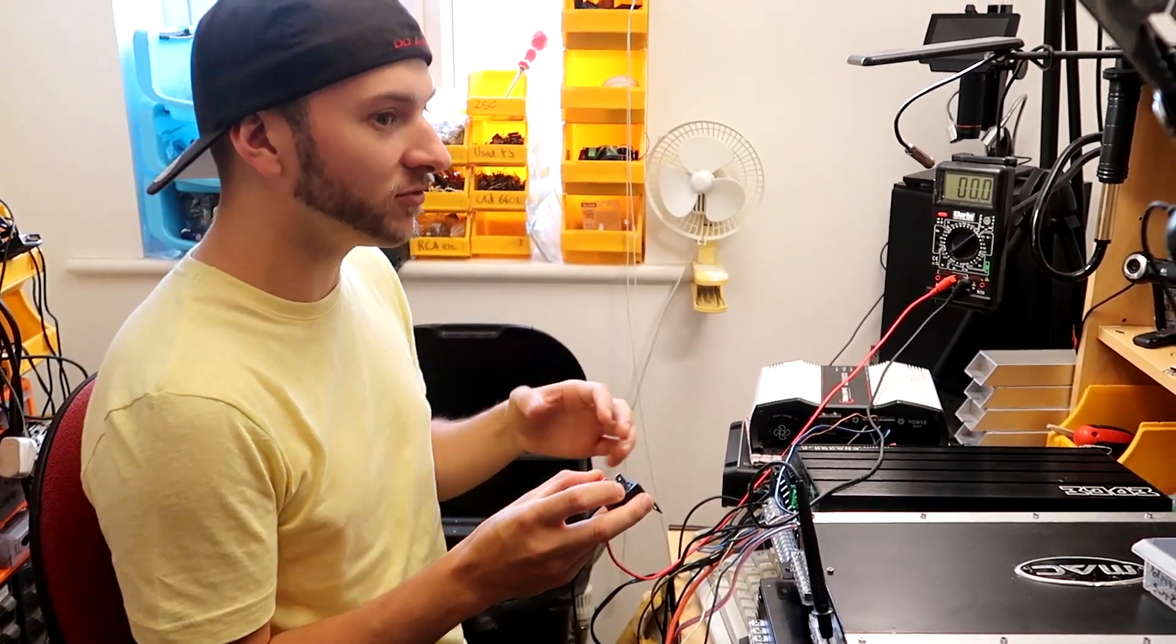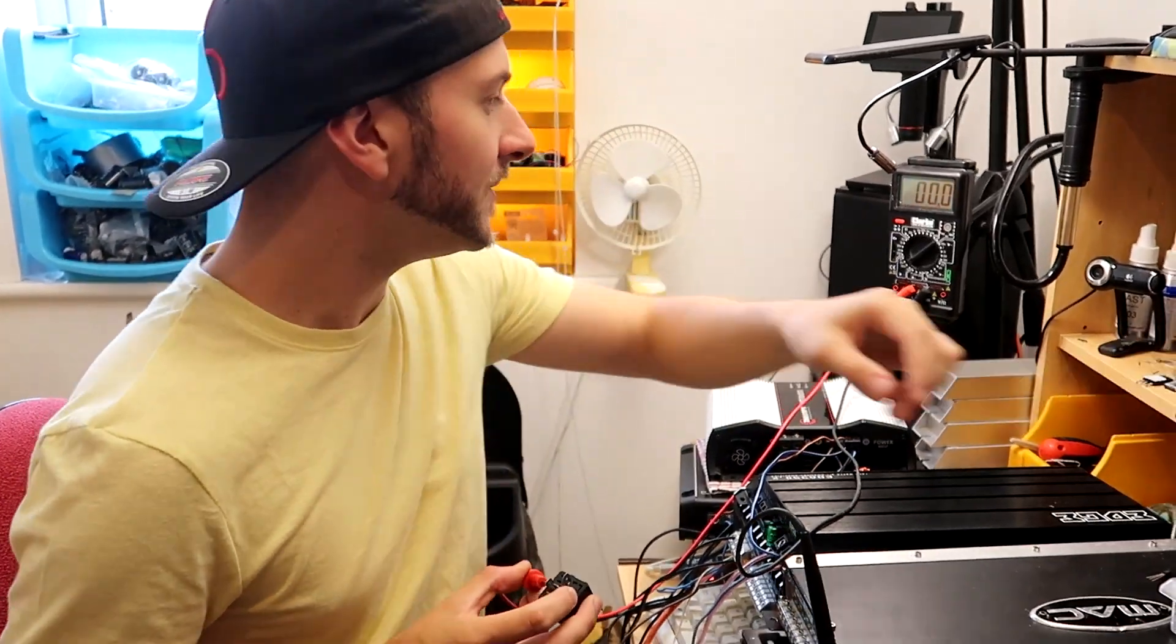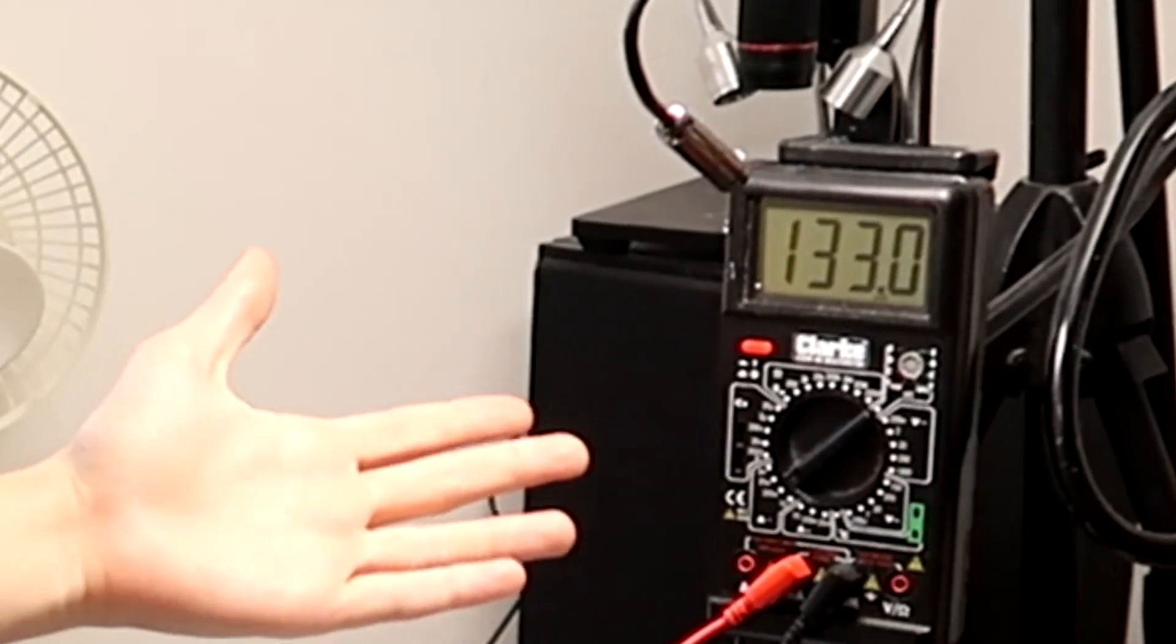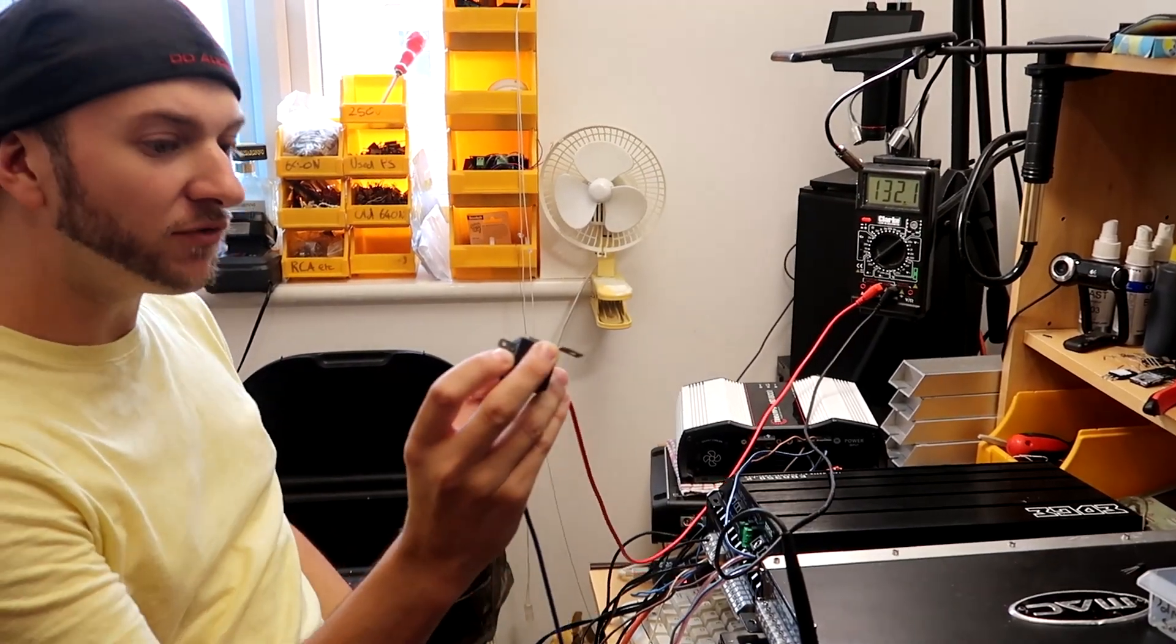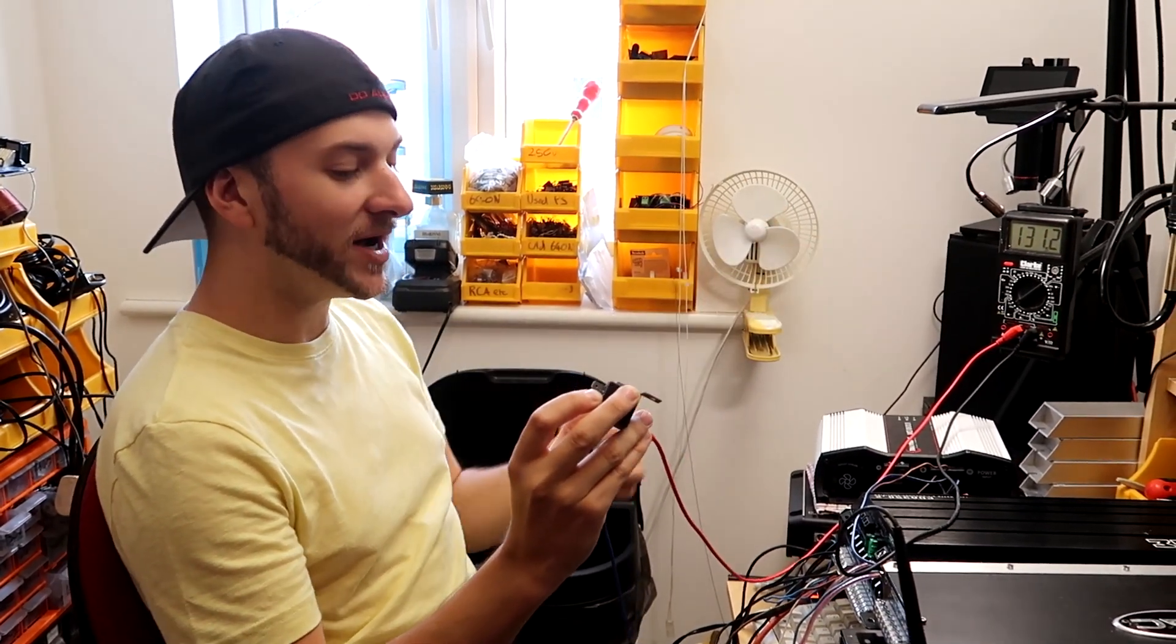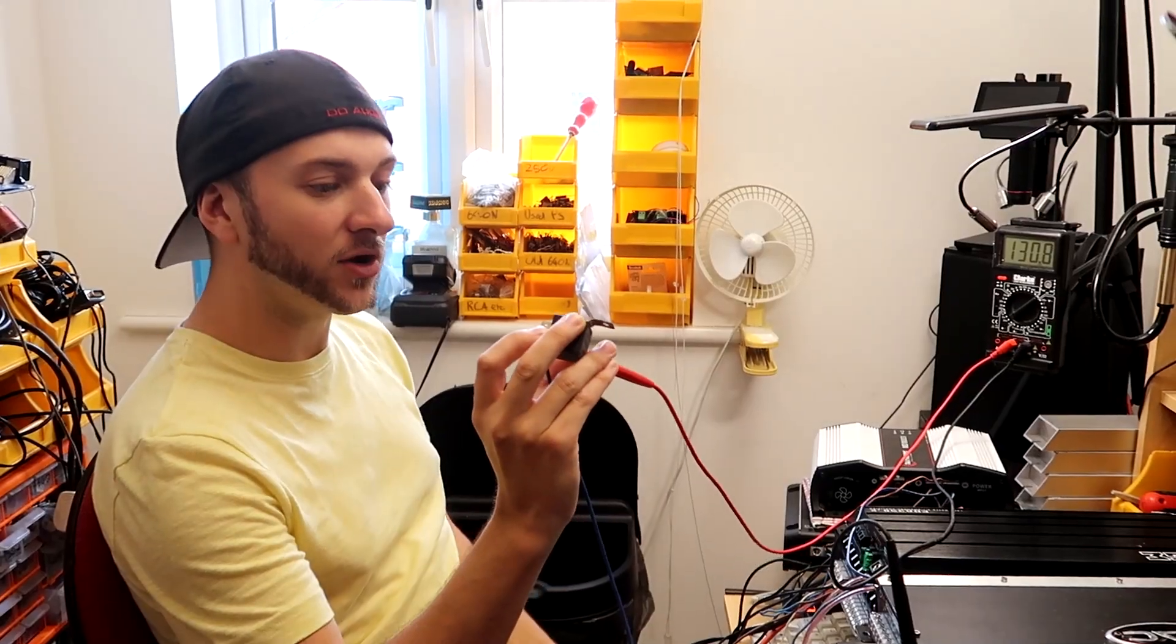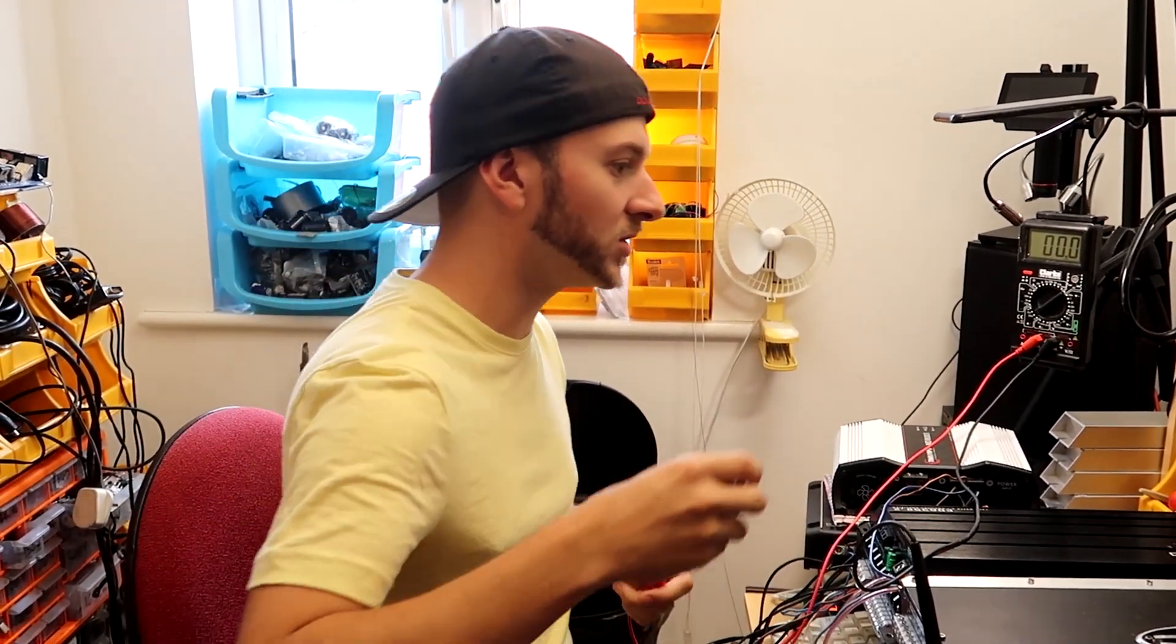So if we just energize the coil real quick with 12 volts here from my bench power supply, we can see that energizing the coil requires about 130 milliamps. Not very much, but that's how much current this relay is gonna draw from your head unit, energizing just the coil to make the connections touch inside the relay to pass the 12 volts onto your amplifiers.